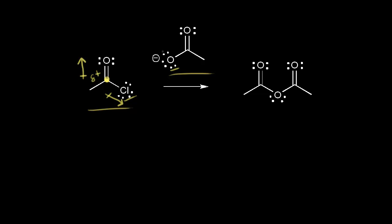Opposite charges attract, so this negatively charged oxygen is attracted to this positively charged carbon. We can say that the nucleophile attacks the electrophile. I draw a curved arrow to show the movement of these two electrons. I can't show a bond directly from this oxygen to this carbon until I take these pi electrons and move them off onto the top oxygen, because carbon can never exceed an octet of electrons around it. So we would now have an oxygen at the top with three lone pairs of electrons, which gives this oxygen a negative one formal charge — two electrons moved off onto the oxygen.